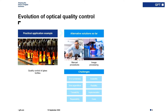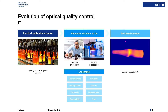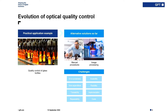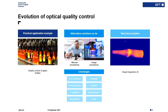The other option, which has been around for decades, is image processing. Basically you have a camera and software that analyzes the images and determines whether the product is okay or not okay. Usually that is tailored to one use case or one product variant, and it's quite hard to adjust to other products or production lines. Implementation costs for that are usually quite high. So what is the next level solution? It's Visual Inspection AI — image processing powered by AI.